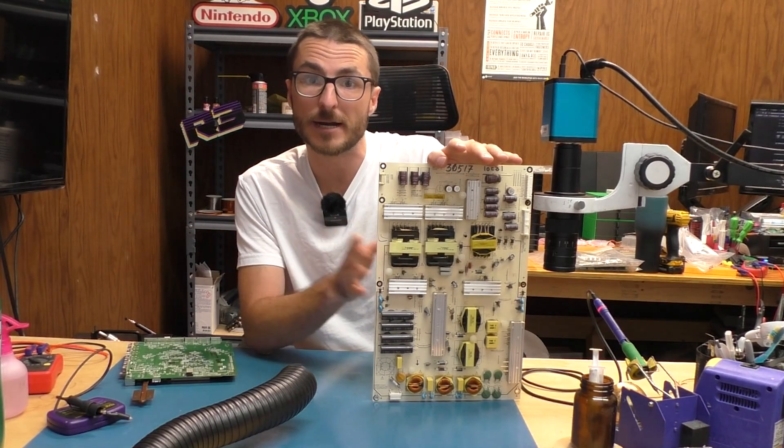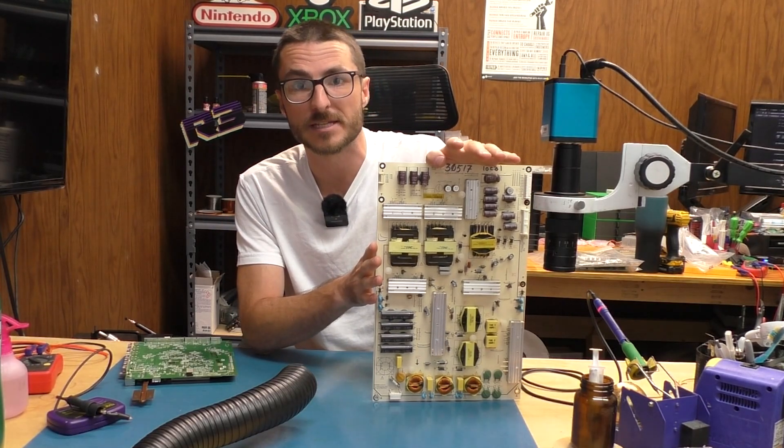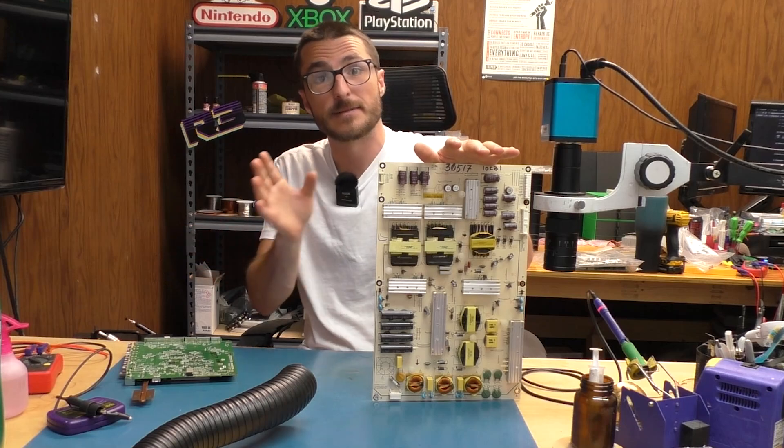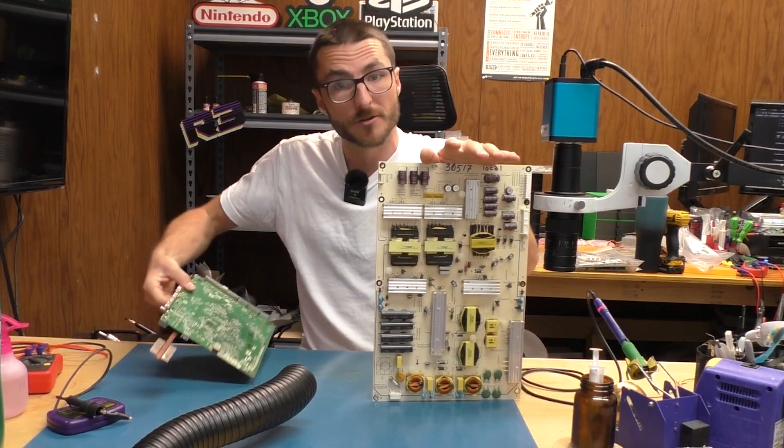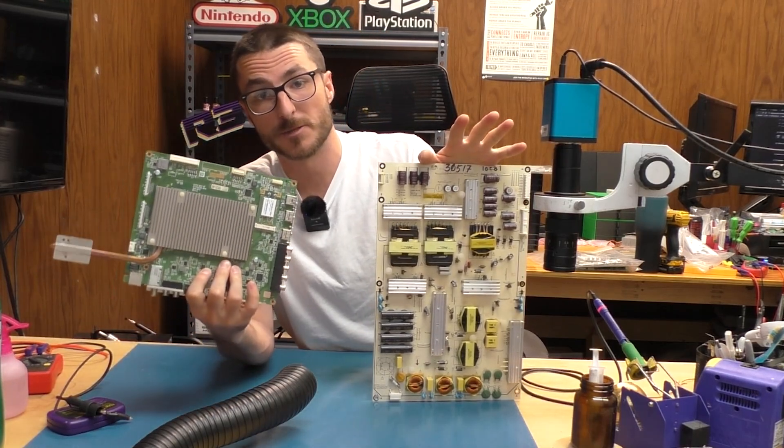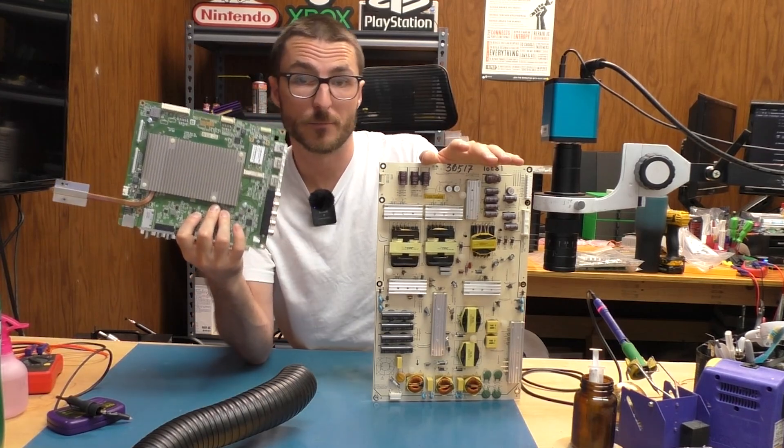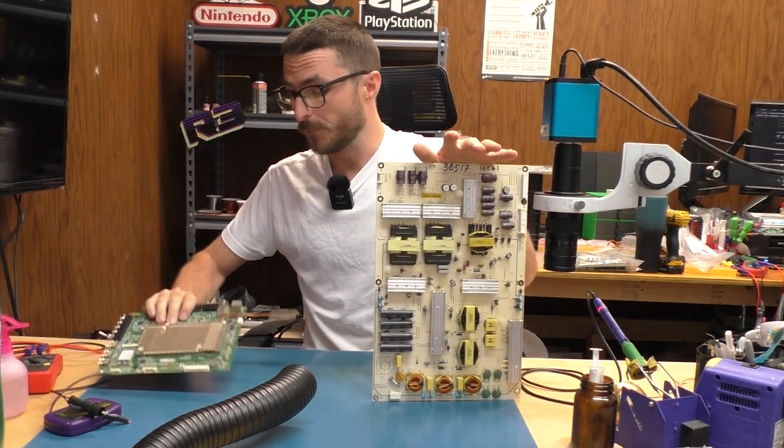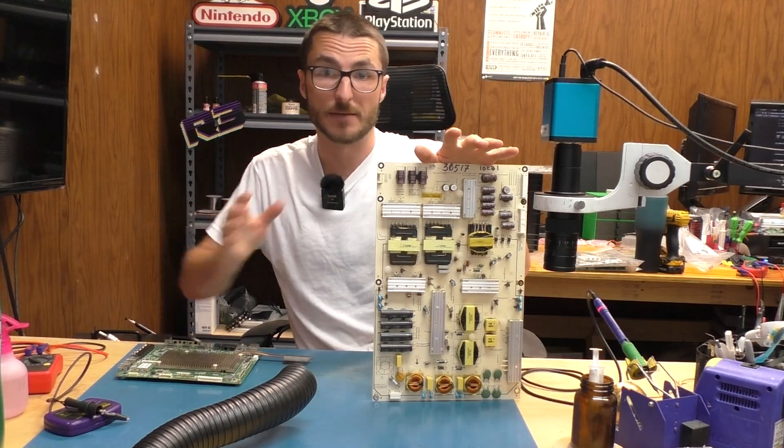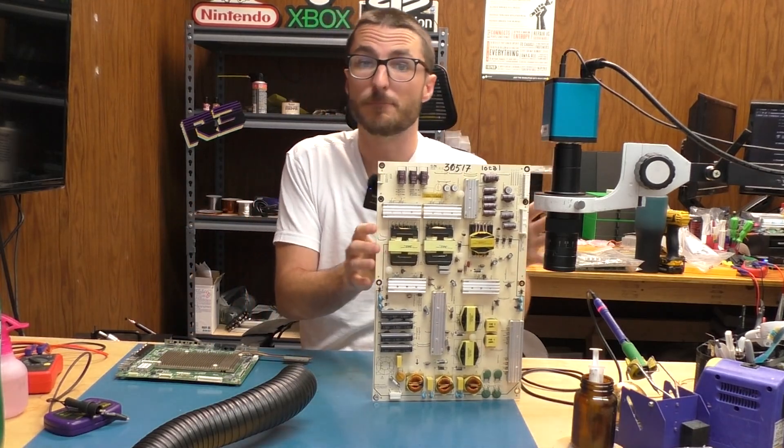In this video I'm going to show you how we fix the power supply for a Vizio model number M70-C3. The customer sent in both the power supply and their main board which actually both tend to fail in this specific unit. We're going to be performing preventative repairs to the main board but right now we're going to focus on the power supply and more specifically bulge capacitors.